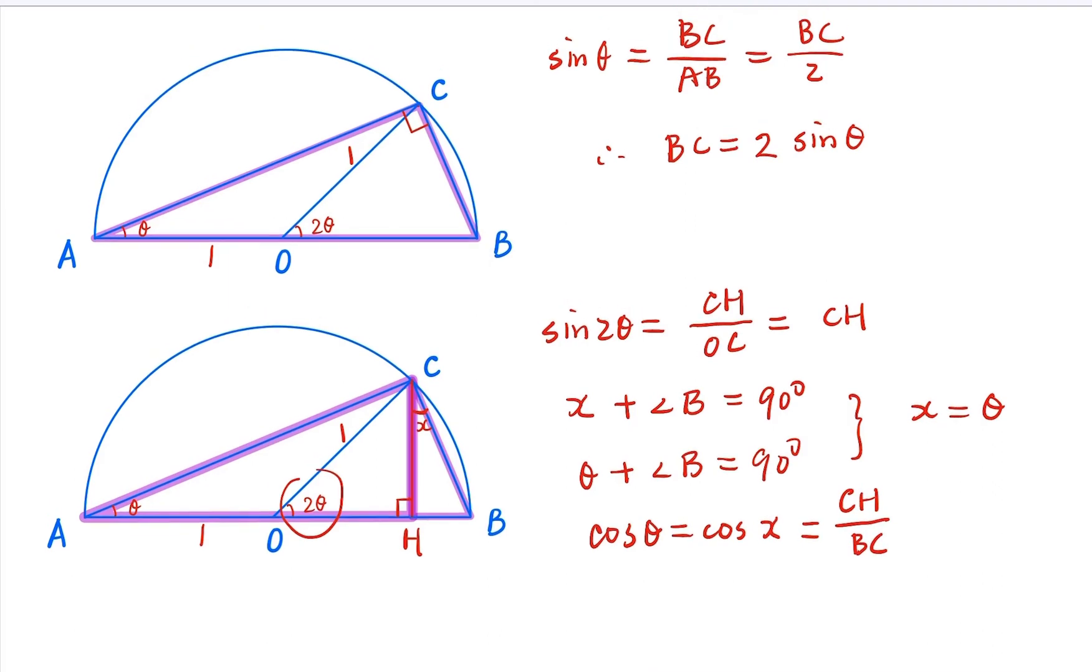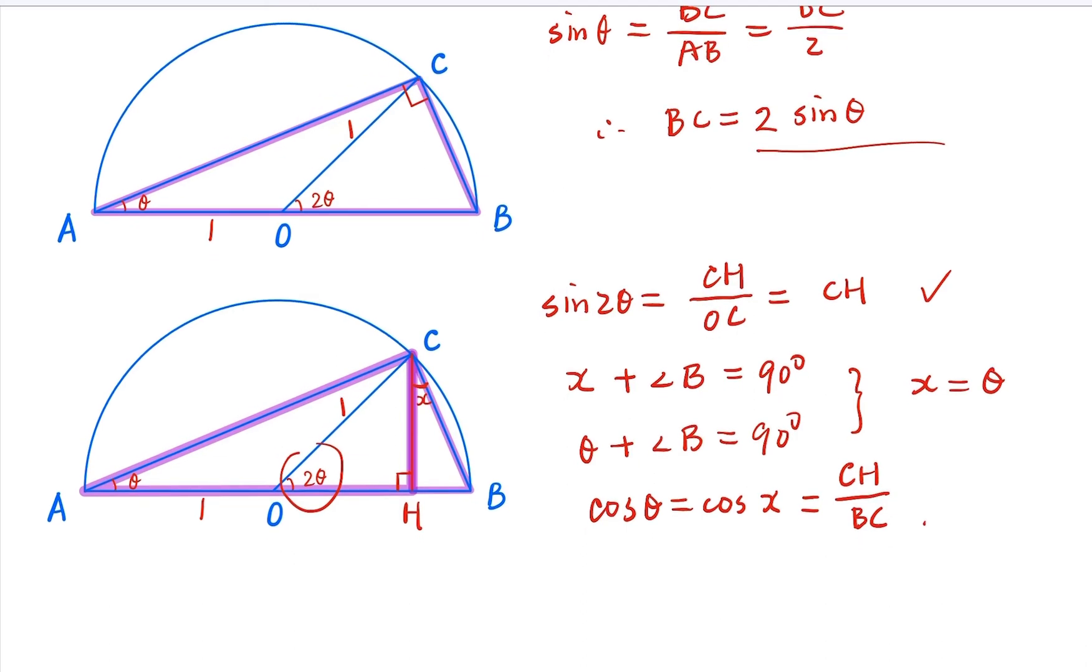What is CH? Sine 2θ. What is BC? Earlier we said it equals 2 sin θ. So plugging in here, we have CH, which is sine 2θ, and BC, which earlier we said is 2 sine θ.